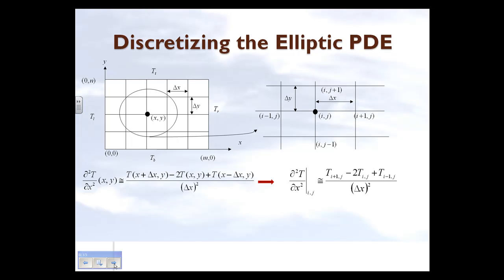Now let's write these approximations for particular nodes. Since a node is at location x comma y, we will number the nodes. We call it node i in the x-axis and node j in the y-axis. The surrounding nodes along the x-axis are i plus 1 comma j on the right and i minus 1 comma j on the left. The node above is i comma j plus 1, and the node below is i comma j minus 1. We are simply replacing the actual coordinates of x and y with node numbers.